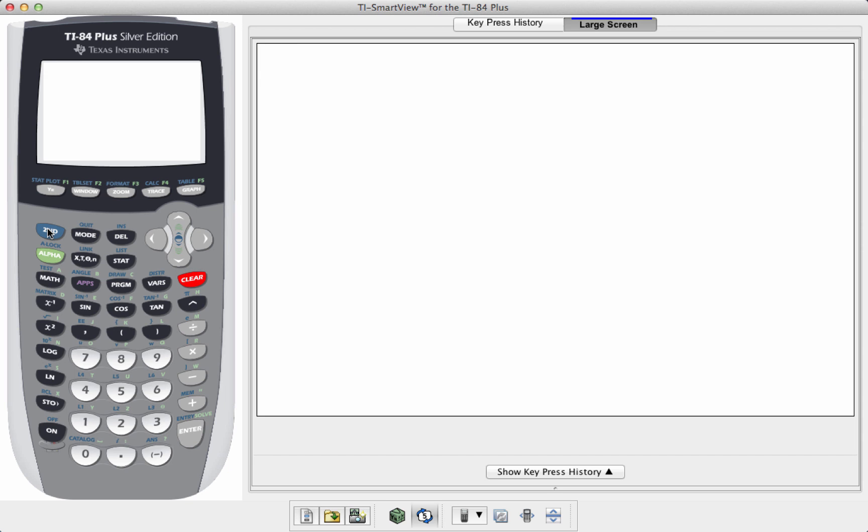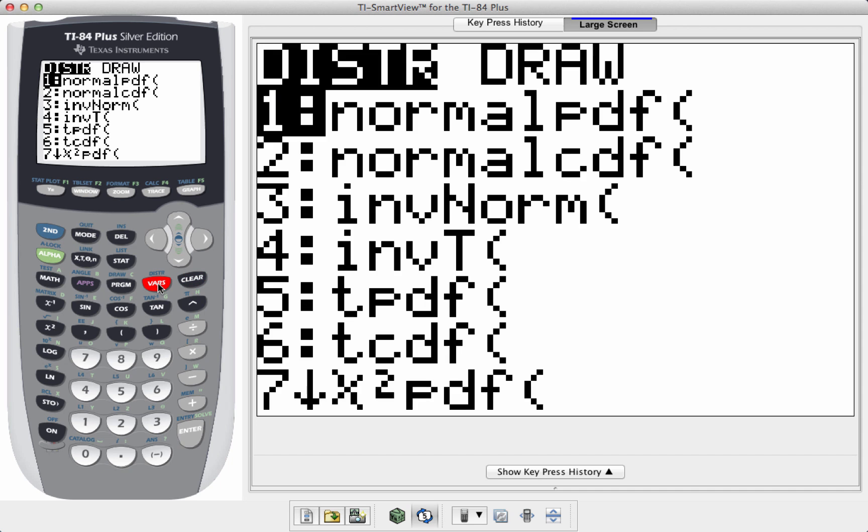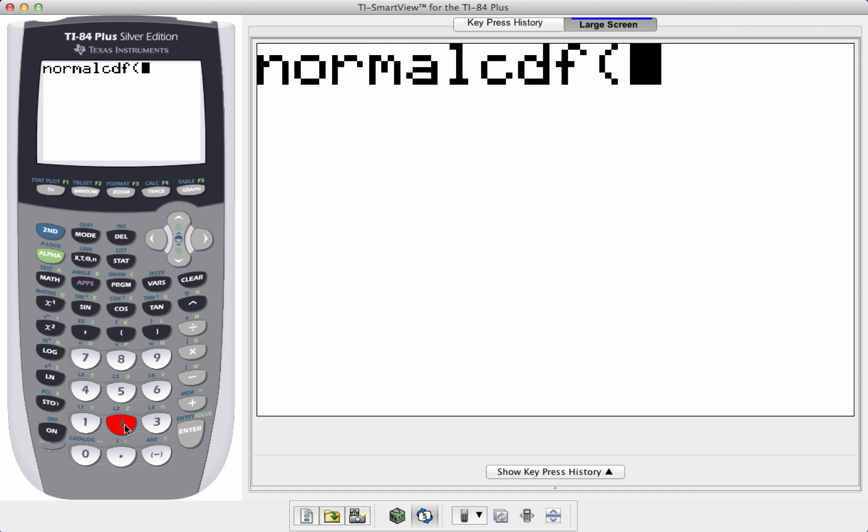Here's how you get to normal CDF. Hit the second key and above the vars key is distributions. The second one in the list is normal CDF. You can either scroll down to it or simply hit the number two.